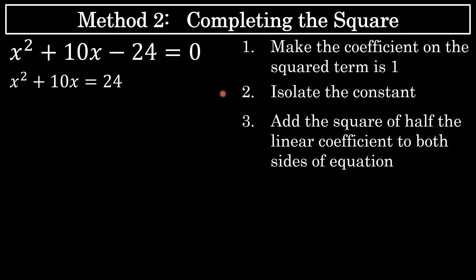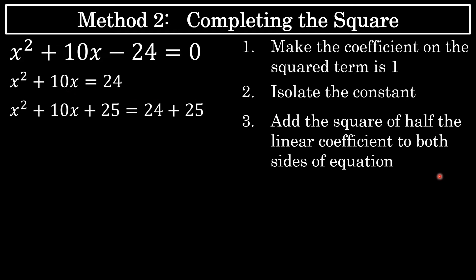Step 3 is the big step — this is where we complete the square. Add the square of half the linear coefficient to both sides of the equation. The linear coefficient is 10 in this problem. We're going to add the square of half of 10: half of 10 is 5, and 5 squared is 25. That's the number that completes the square — add 25 to both sides. So we now have x squared plus 10x plus 25 on the left, and don't forget to add 25 on the right side as well.